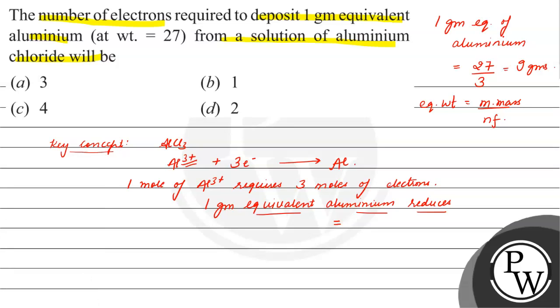So this 9 grams is equal to... that is 27 grams requires 3 moles of electrons, and 9 grams...